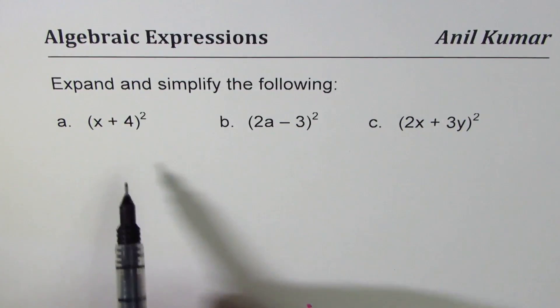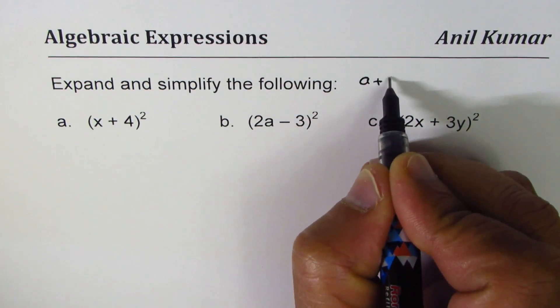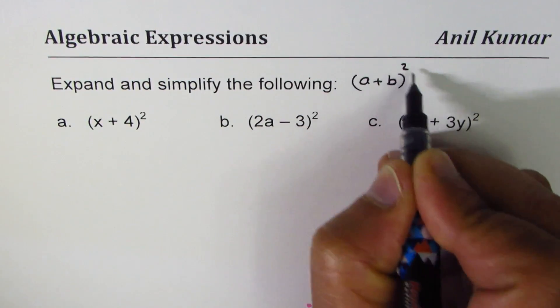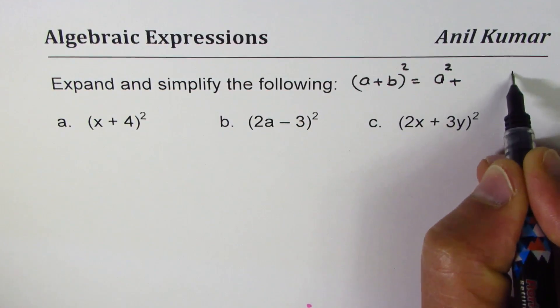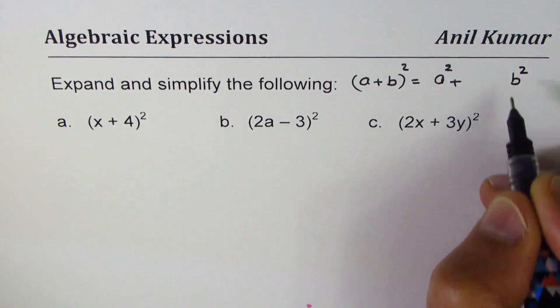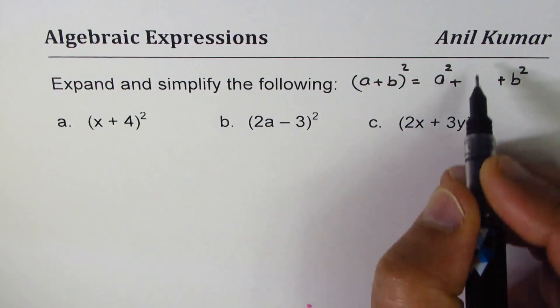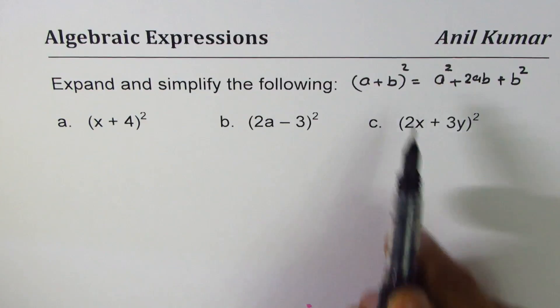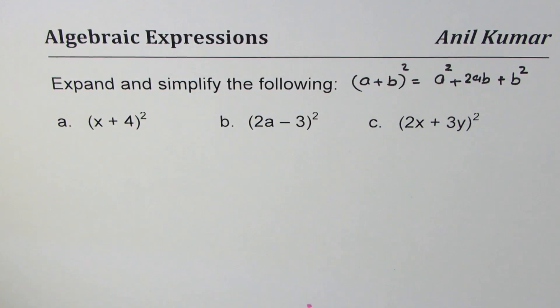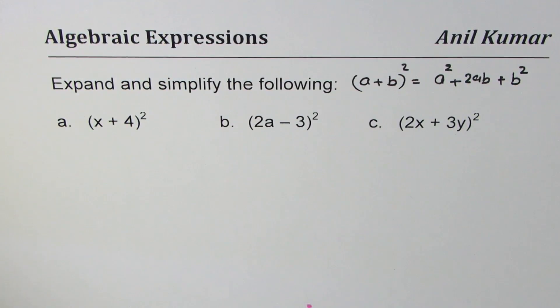Now before I begin I want to ask you one thing. If I have a plus b whole square what do I get? Do I get a square plus b square? No. I get a square plus 2ab plus b square. This is very important to understand and that's the formula which I'm going to apply for all the three equations.